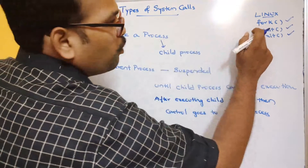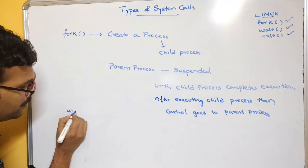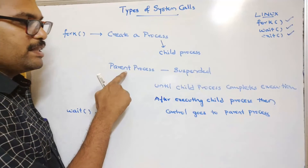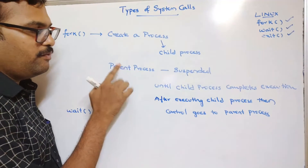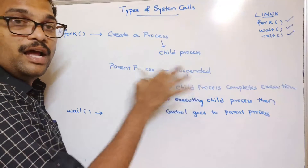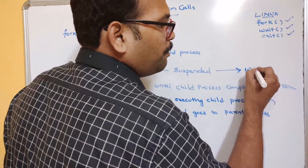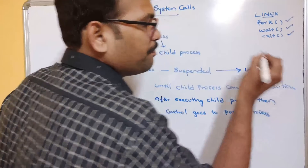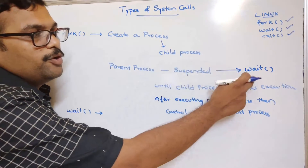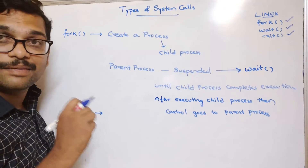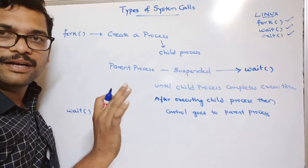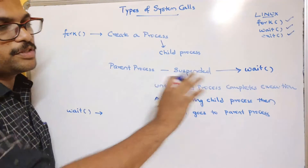The next one is wait. Whenever the child process is created, the parent process gets suspended — and this is done with the help of the wait system call. If the wait system call is executed, the parent process is automatically suspended until the child process completes its execution.